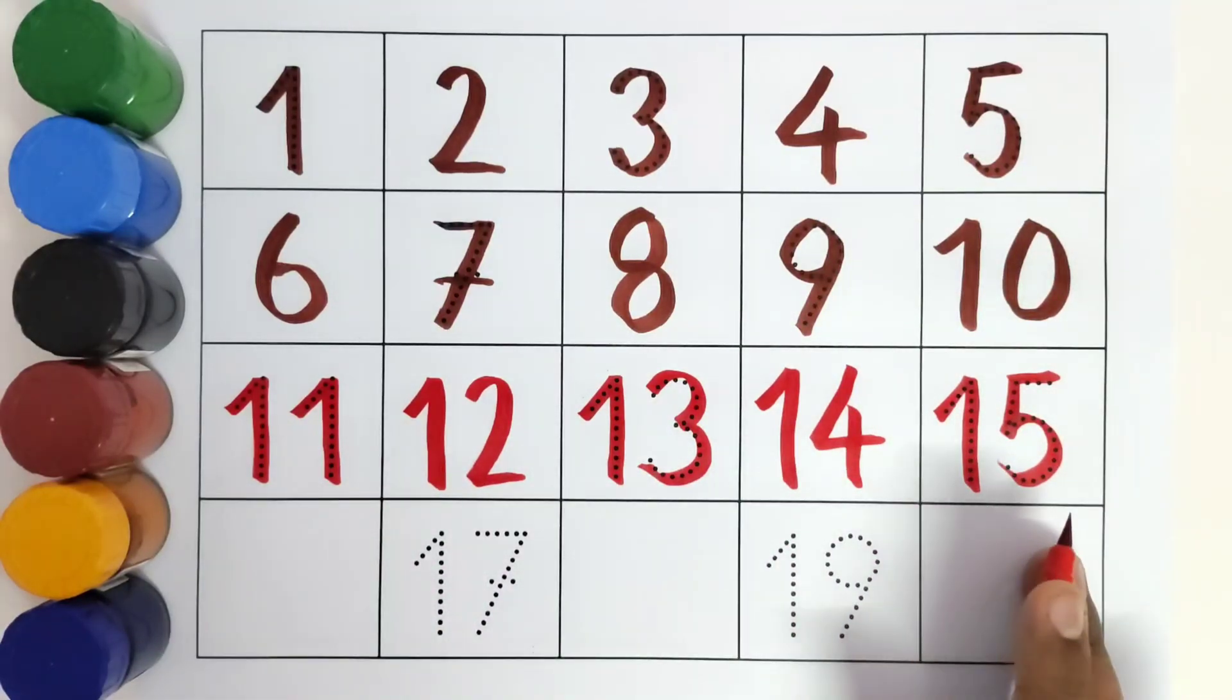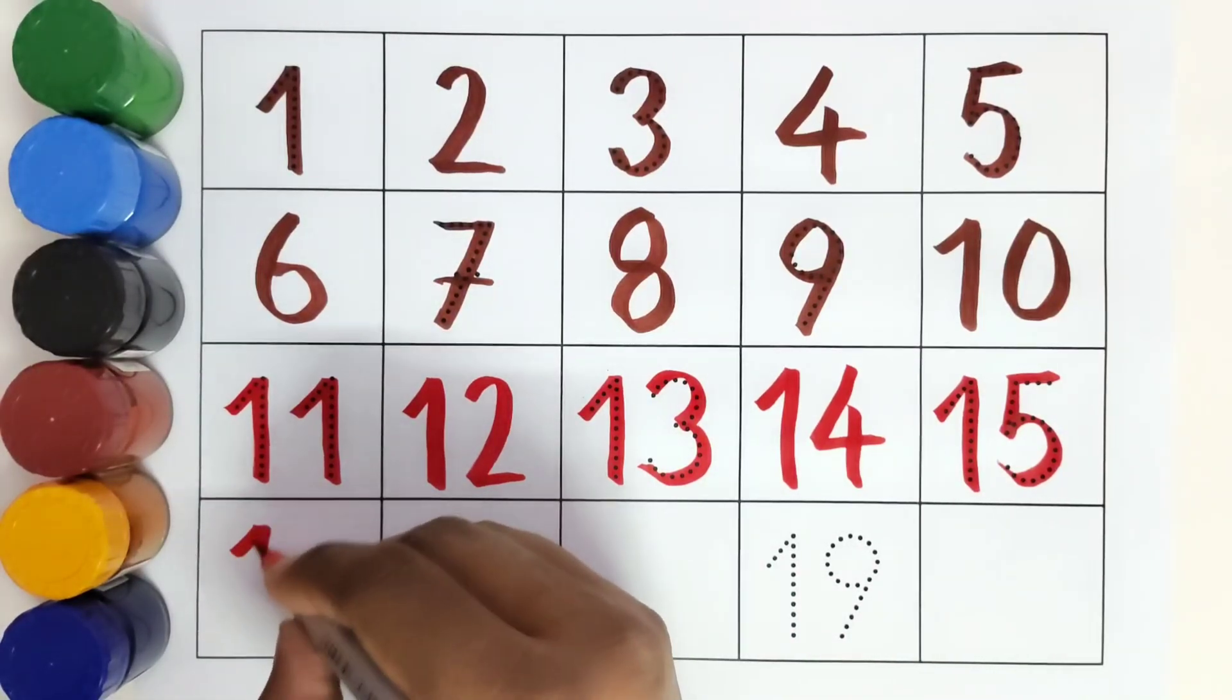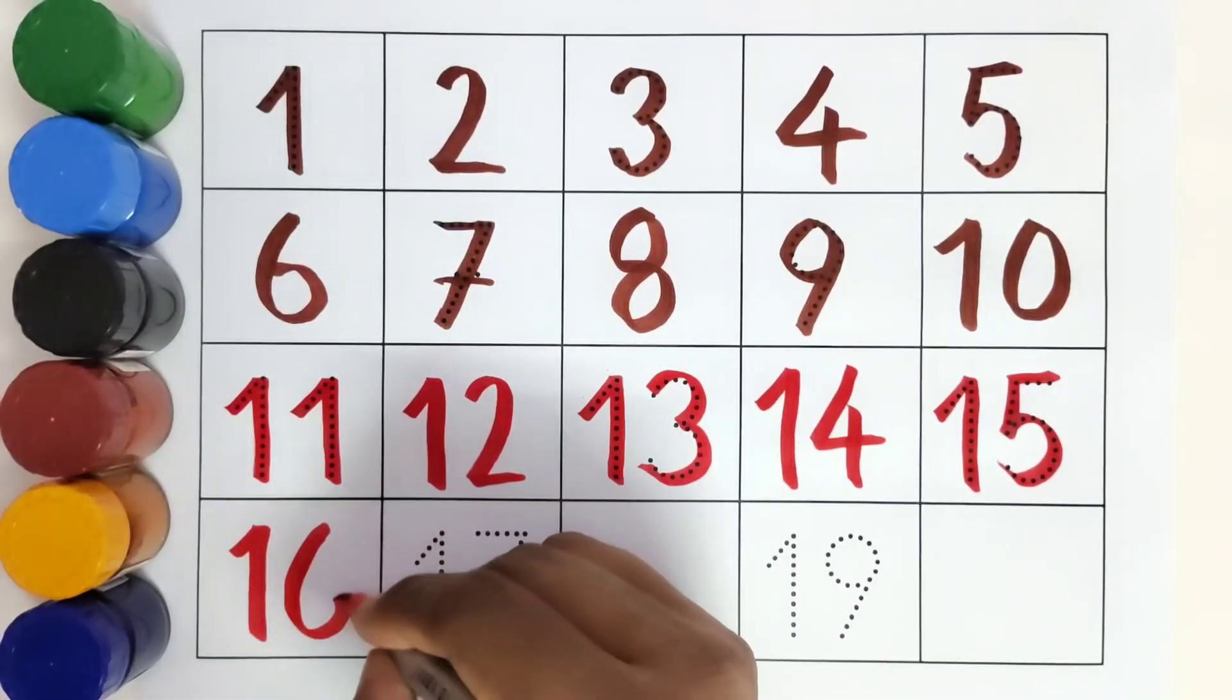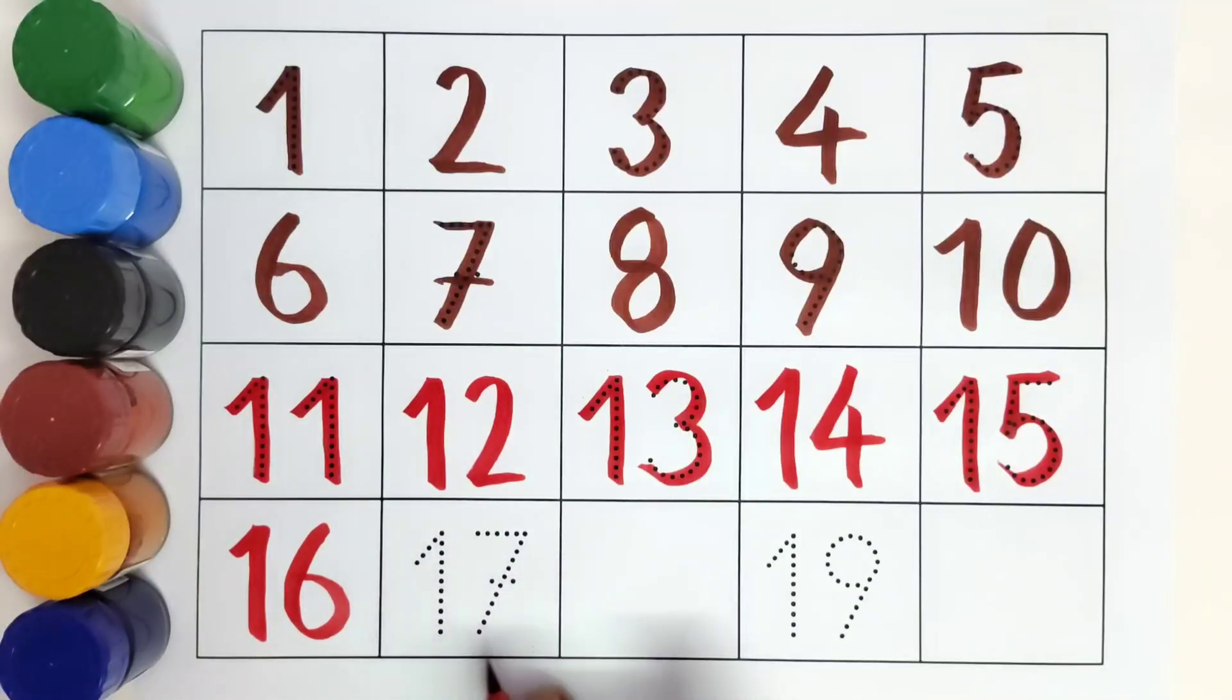What comes after fifteen? Six. What comes after fifteen? Seven. Sixteen. Sixteen. One, one, six. Sixteen.